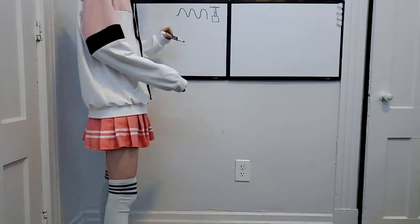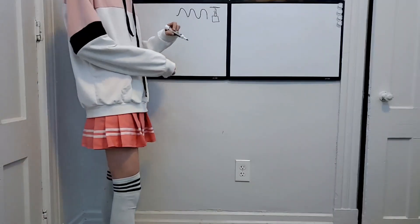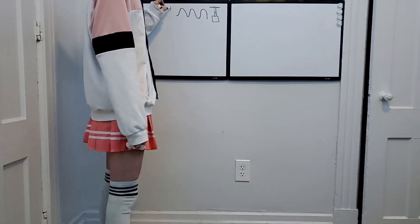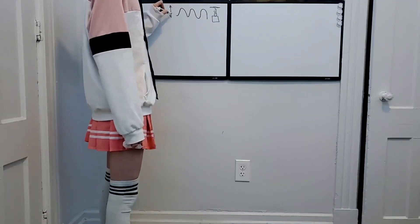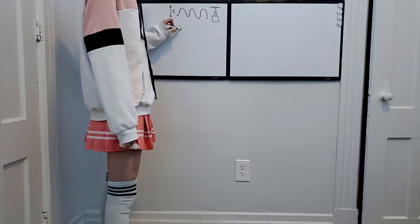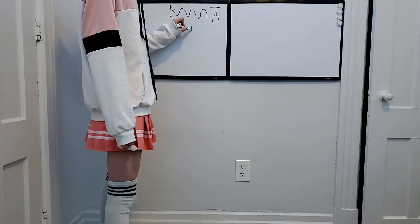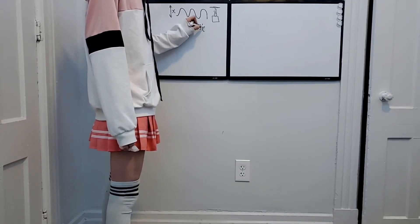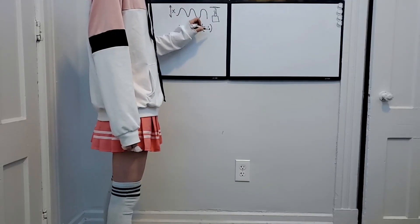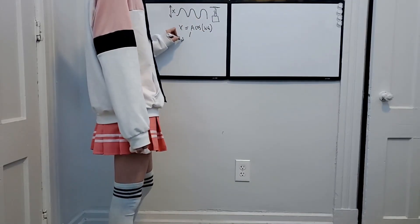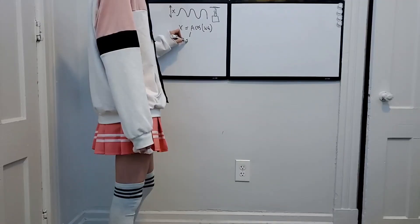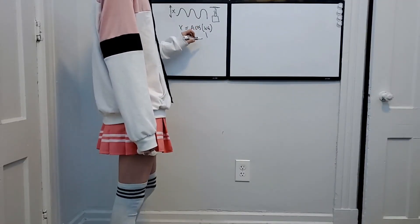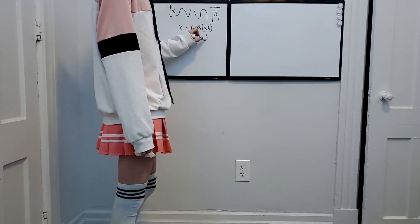We can represent that using an equation for cosines and sines. We're going to say that this axis is the x direction, so x is equal to A cosine omega t. Here A is our amplitude and omega is our angular frequency.